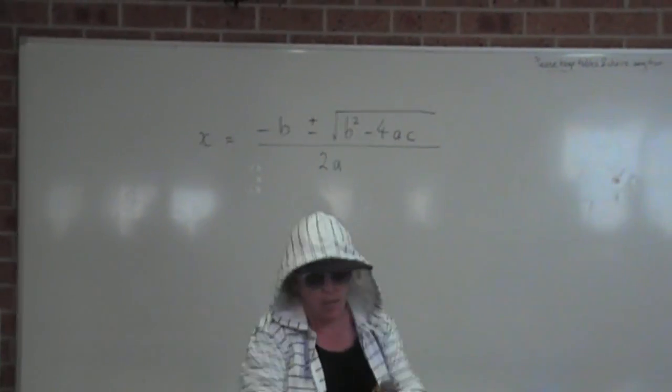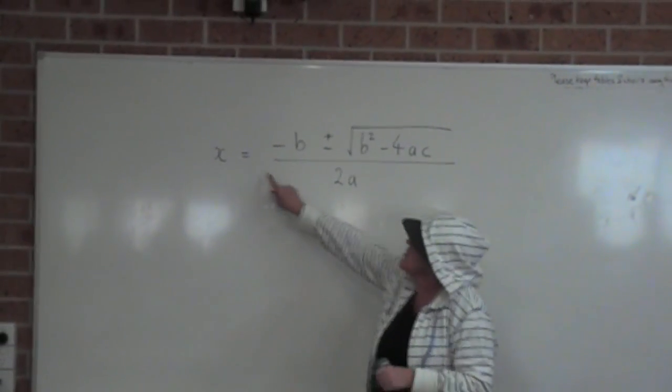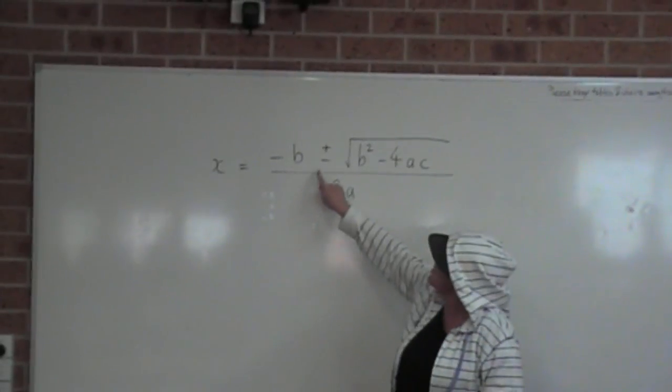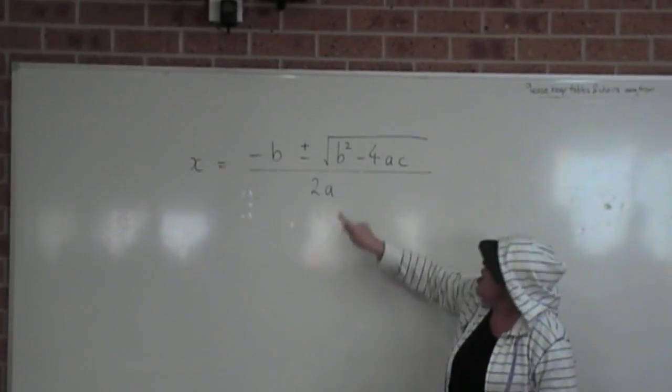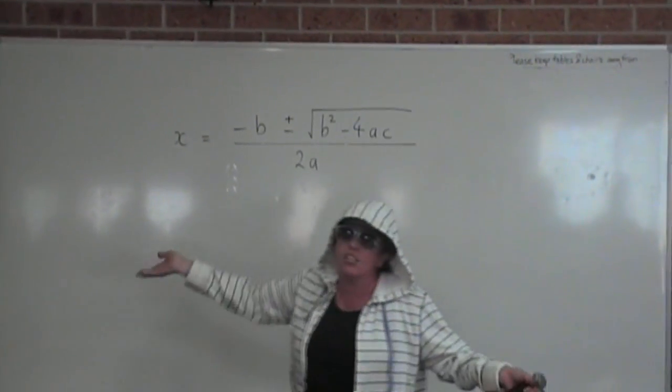X equals minus B, plus or minus square root of, B squared minus 4AC. Over 2A and that's all I've got to say.